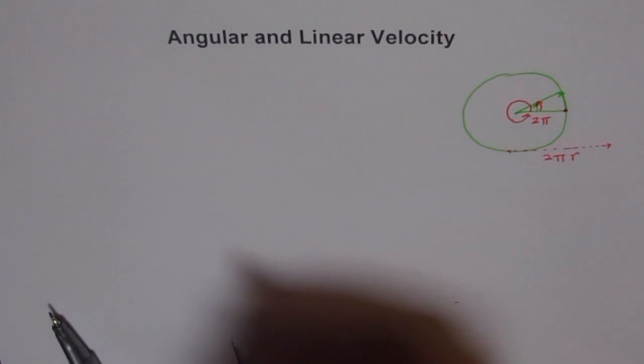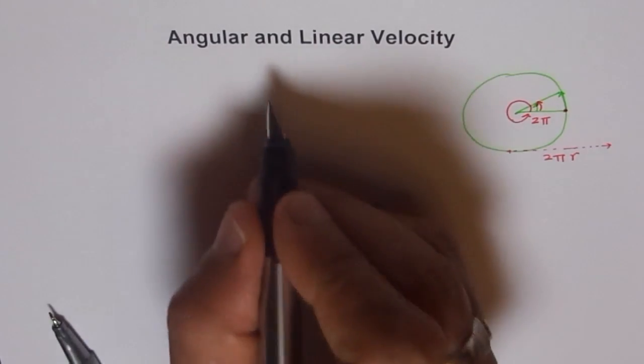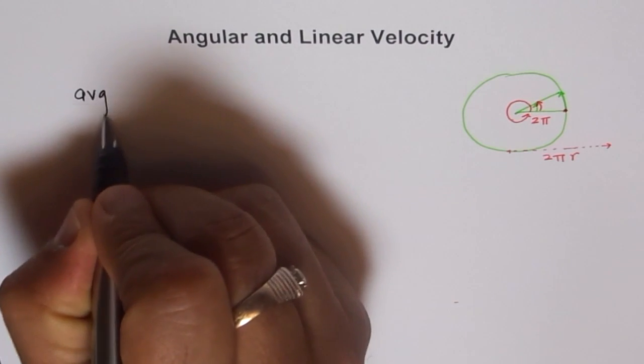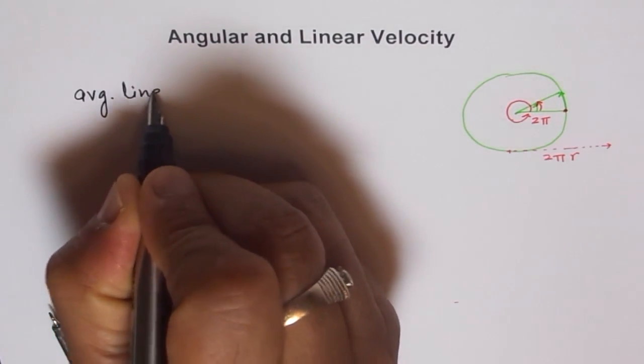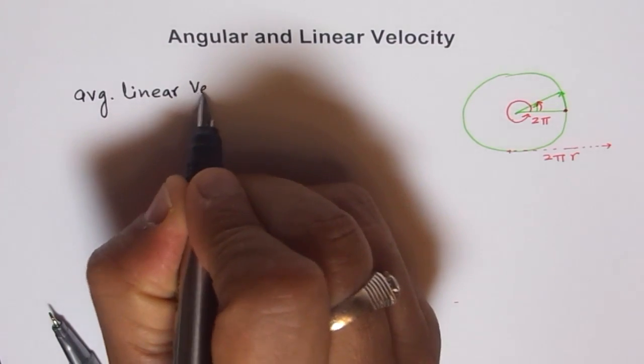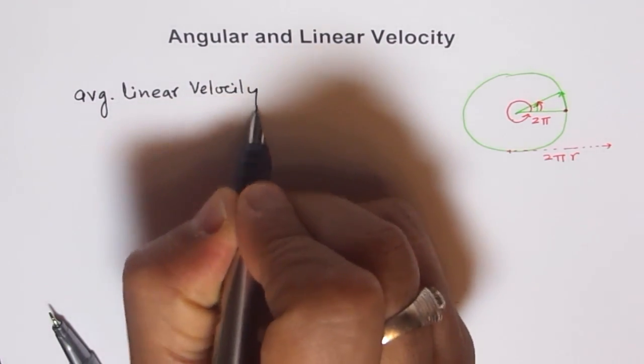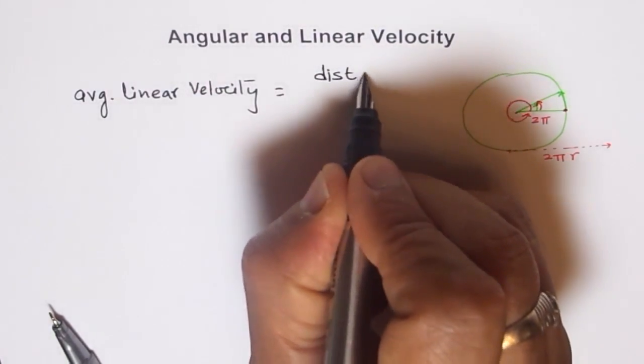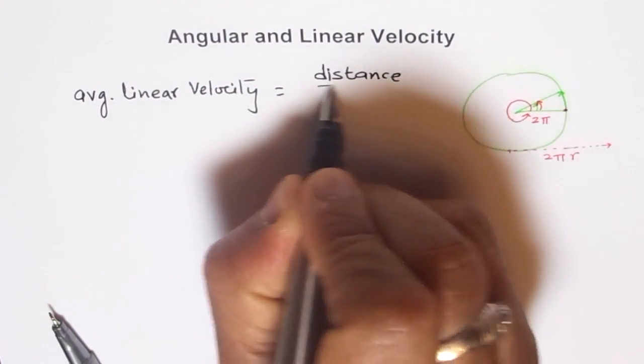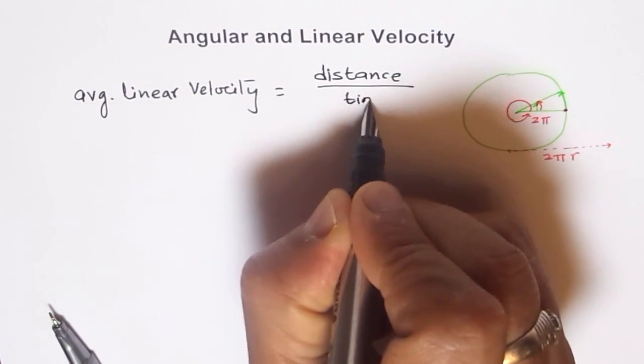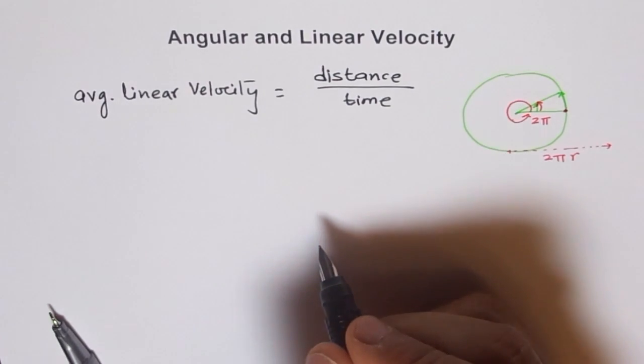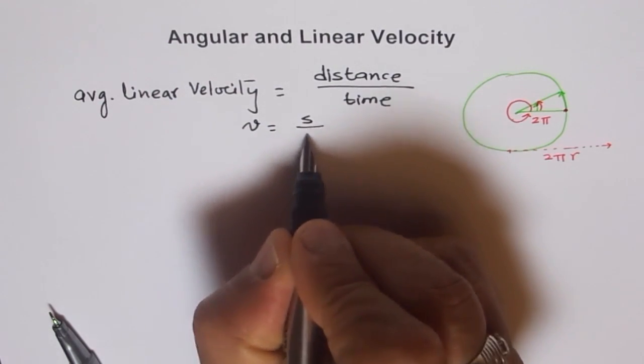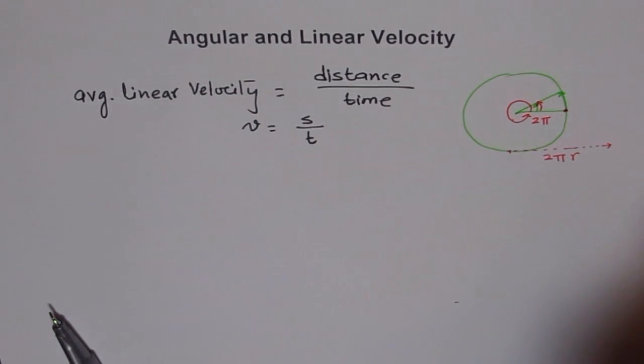We can say that in general, what is average linear velocity? Average linear velocity is distance over time. Let us assume that v is my velocity and s is the distance and t is time. So we can write this as v equals s over t.